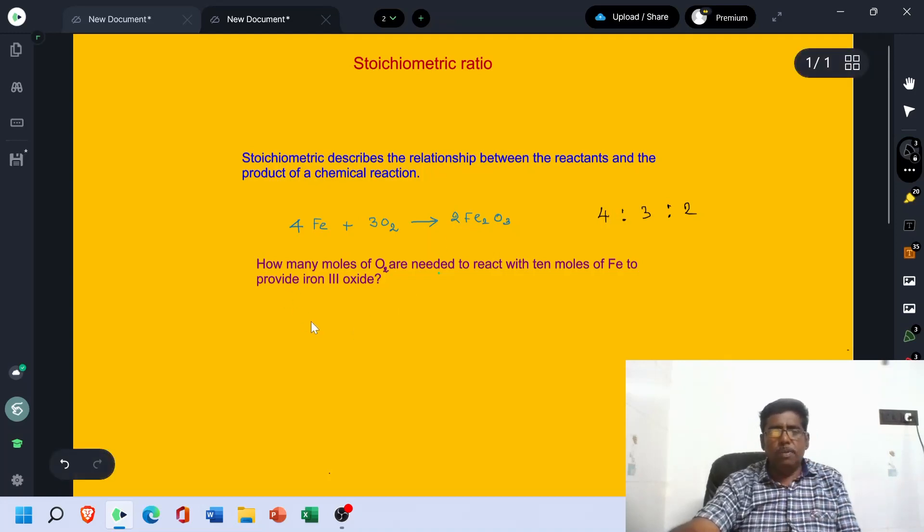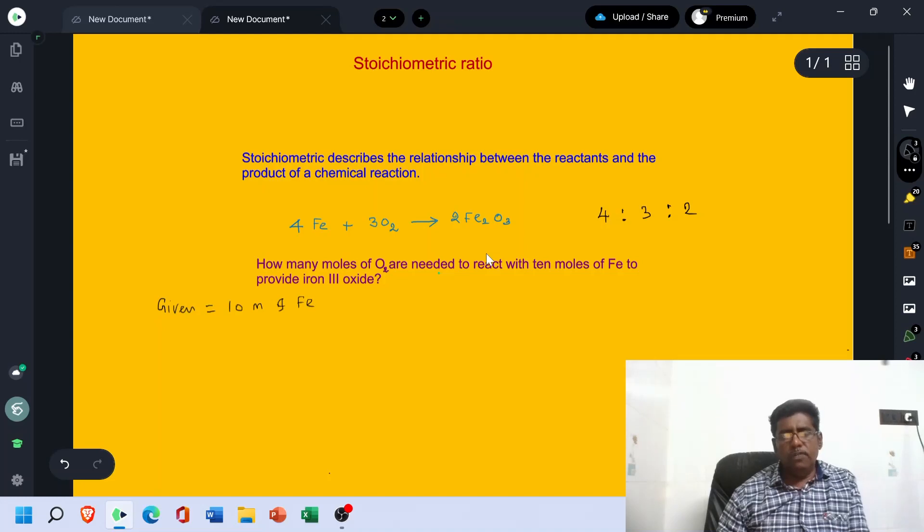Now see this problem. How many moles of O2 are needed to react with 10 moles of Fe to provide Ion 3 Oxide? Here Ion 3 Oxide is our Fe2O3 Ferric Oxide. Here given is 10 moles of Fe.